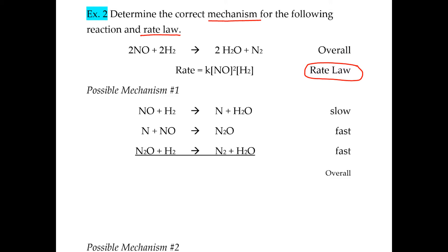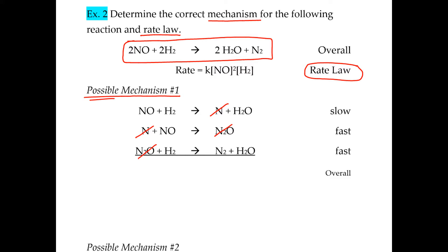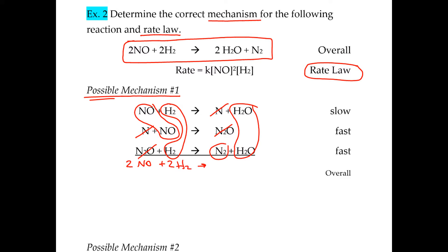In mechanism 1, we have some intermediates, so we're going to cross those off to make sure our overall reaction matches. When you cancel out all the intermediates, you'll see that you have two NOs, two H2s, two waters, and an N2 remaining — and that is exactly the same as the overall reaction given at the top of the page. So the first thing you want to make sure of with a mechanism is that it all adds up to the correct reaction.